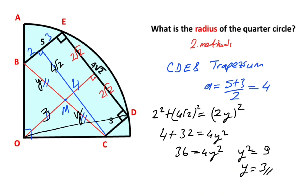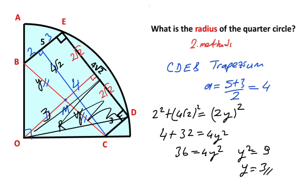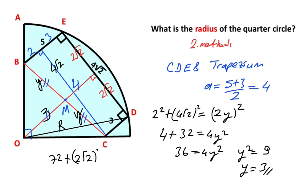Next step: if we connect these two points, this length is also 7 units. Therefore, for this right triangle, applying the Pythagorean theorem: 7² + (2√2)² = R², so 49 + 8 = R², giving R² = 57. That means R equals √57 units.